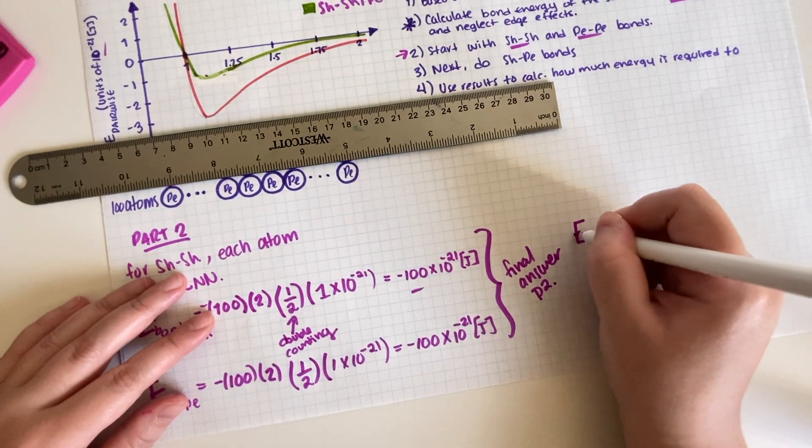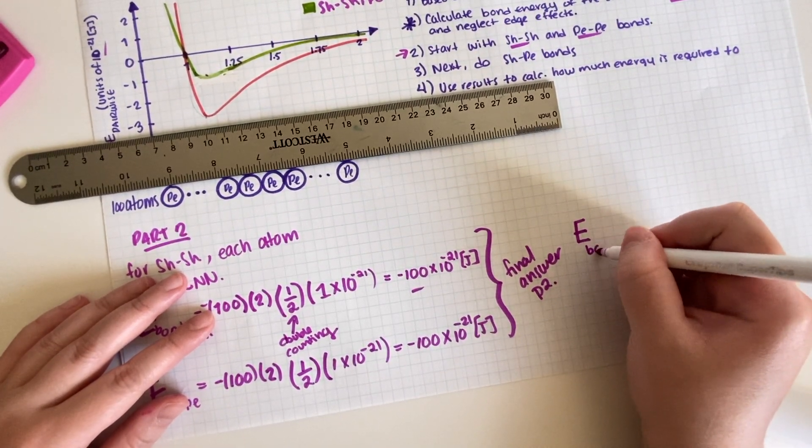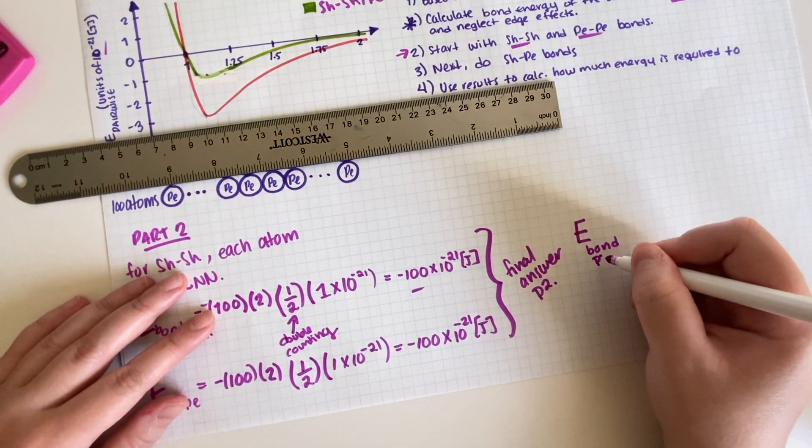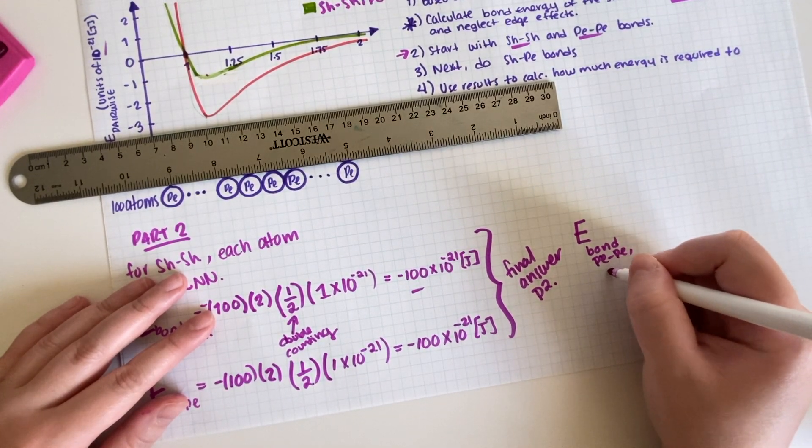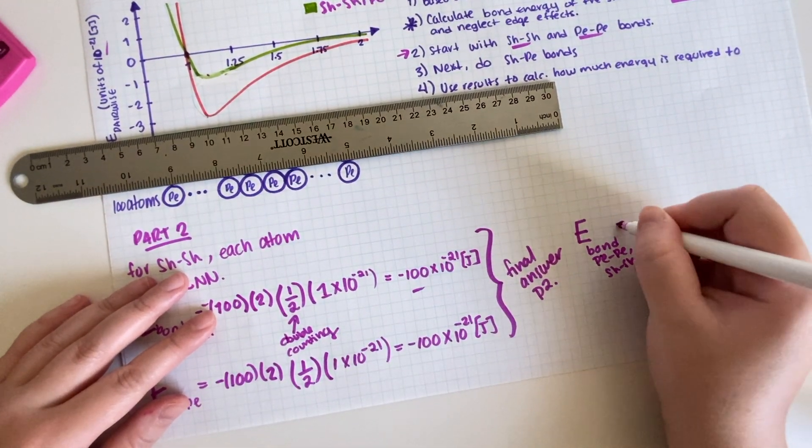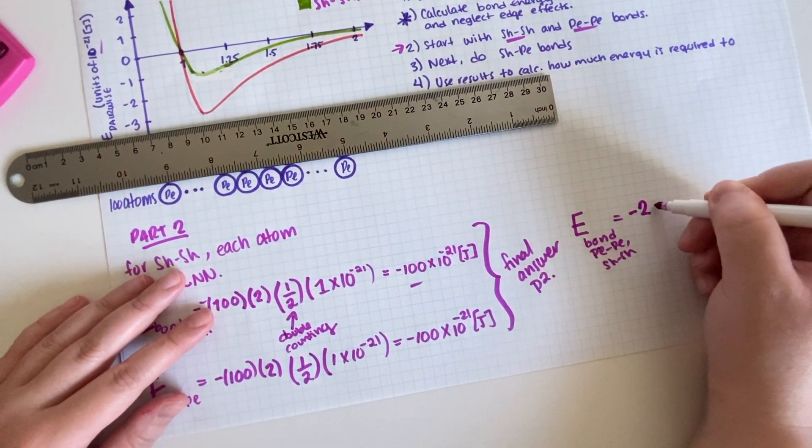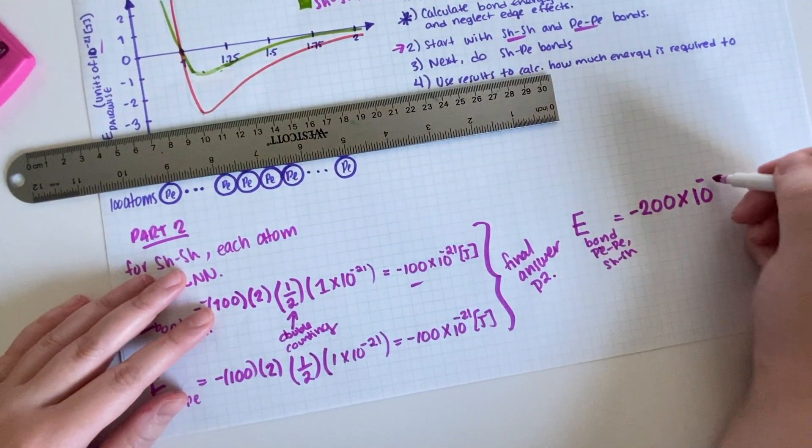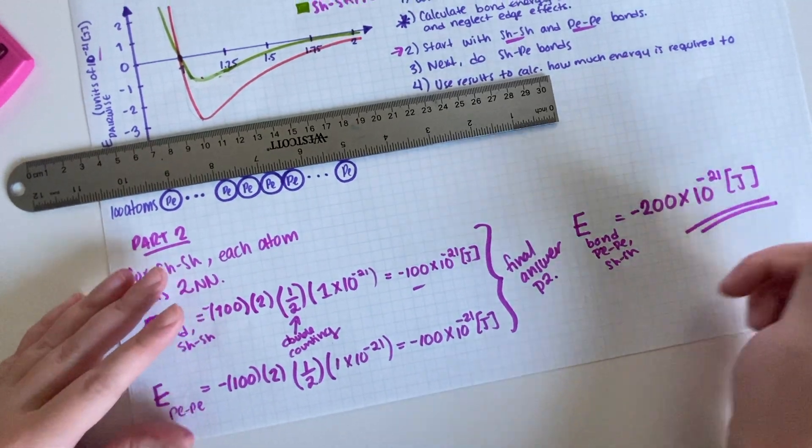Like this. So final answer for two is the E_total—well, the E_bond I'm sorry—for the Pe-Pe is equal to the addition of these two, so negative 200 times 10 to the negative 21 joules. Final answer.